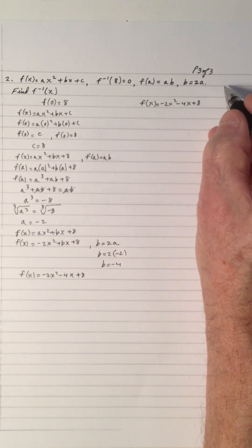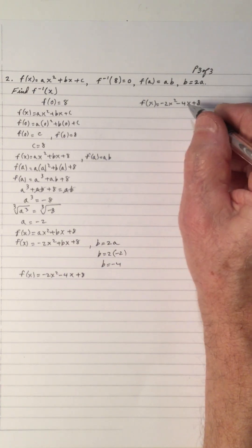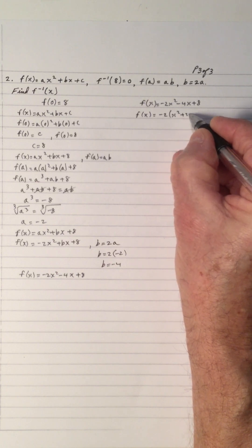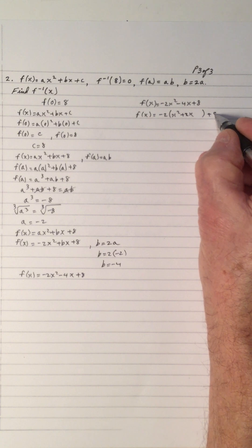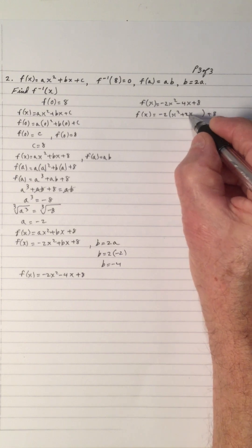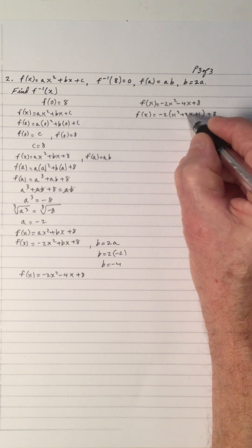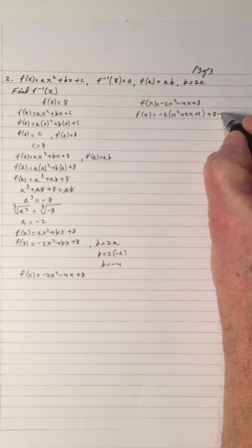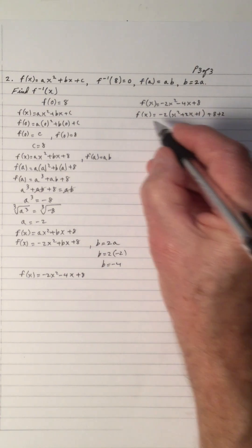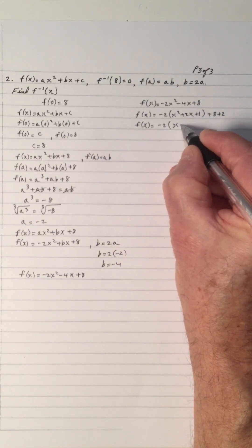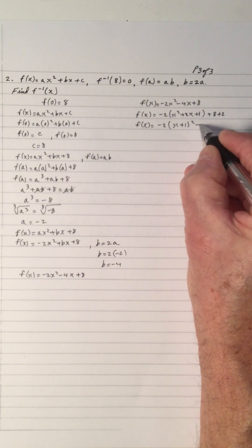So again I have a choice: use negative b over 2a or complete the square. Let's complete the square. Take the negative 2 out. That gives you x squared plus 2x. We take half of 2, which is 1, and 1 squared is 1. That makes it a perfect square trinomial. But because I put a 1 here, negative 2 times 1 is negative 2, so I have to do its opposite, which is 2. So f of x equals negative 2 times x plus 1 all squared plus 10.